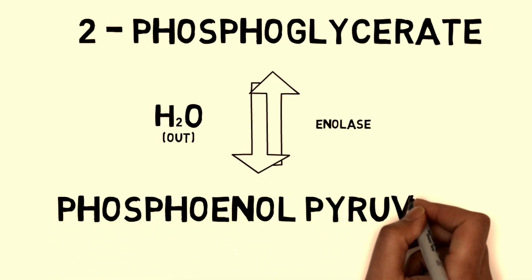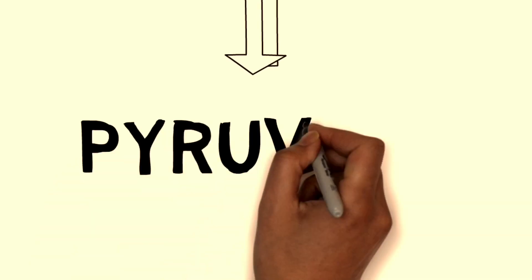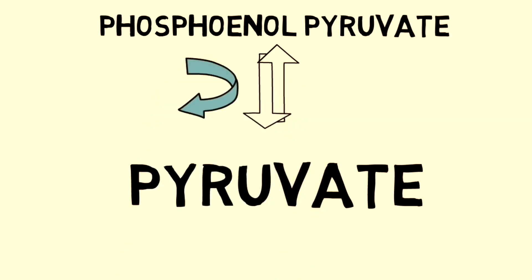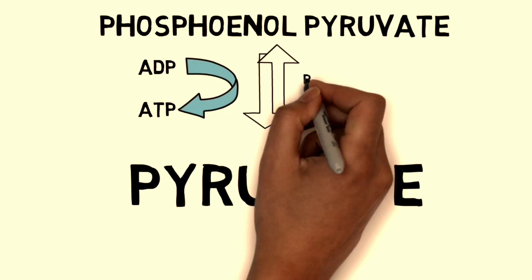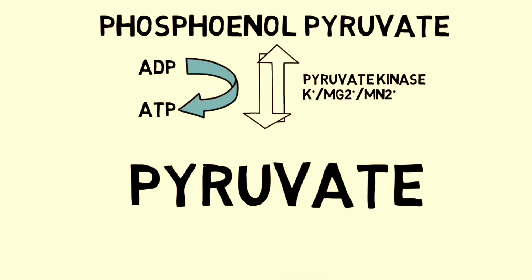Now we come to the final step: phosphoenolpyruvate produces pyruvate. One phosphate is released, and this phosphate is accepted by ADP to produce ATP. The enzyme responsible is pyruvate kinase, and cofactors such as potassium, magnesium, and manganese are also used in this process. Pyruvate is the end product of glycolysis, which then undergoes aerobic respiration to continue the Krebs cycle, which will be discussed in another session.